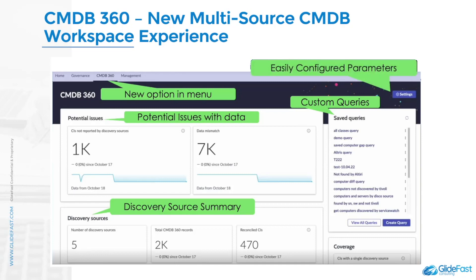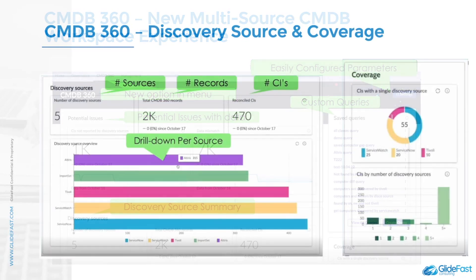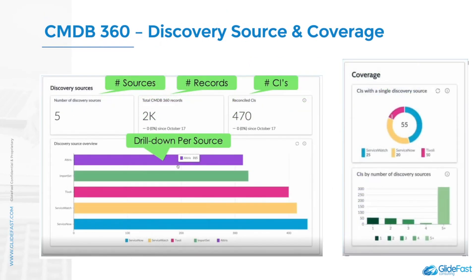You can also get a summary of your sources created, manage queries that you have created, and configure the parameters of this view to your needs. The cards in the discovery sources tile will show you aggregated counts across all your discovery sources. And the cards on the coverage tile will show you a breakdown of configuration items per the number of discovery sources reporting those configuration items.